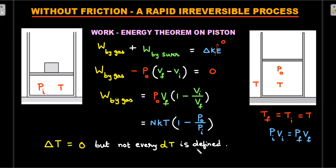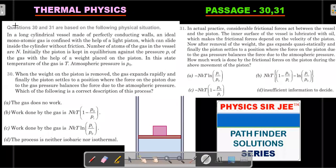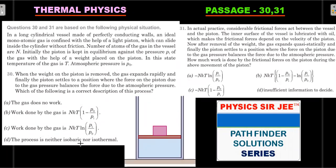Key distinction: ΔT = 0 (same temperature at start and end) but individual dT values are not defined during the irreversible process. Therefore this cannot be called isothermal - isothermal means temperature is defined and constant throughout, not just at endpoints. Checking options: gas does work (not zero) - so that option is wrong. The correct options are B (work done expression) and D (cannot be called isothermal or isobaric, since pressure also changed).